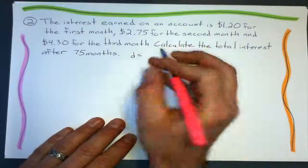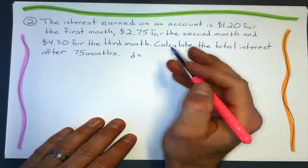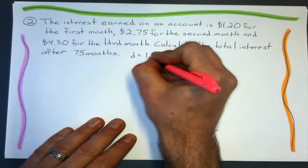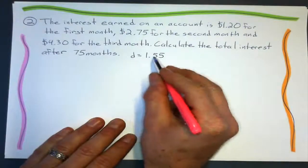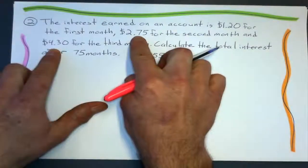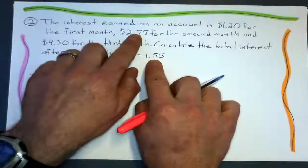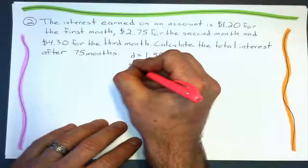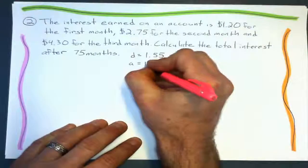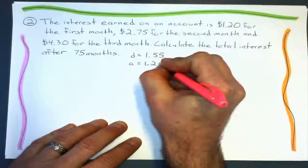It does. I think it's going up by a certain amount each time. It's going up by $1.55. So it is an arithmetic sequence. $4.30 minus $2.75 is $1.55. $2.75 minus $1.20 is $1.55. So we got that. Alright, what about the first term? That's $1.20. I'll leave the dollar signs out for the problem.